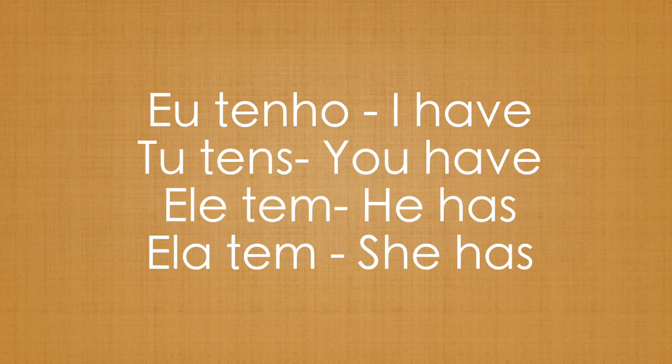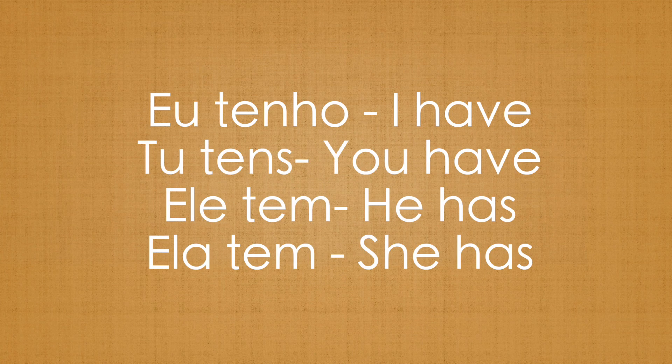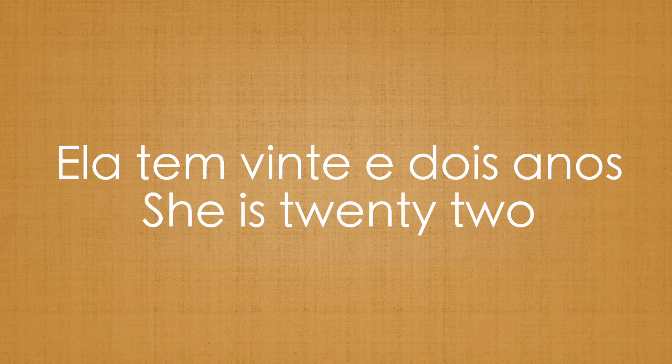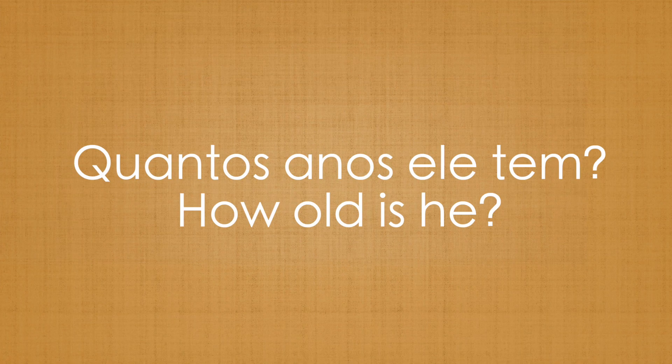Eu tenho, tu tens, ele tem, ela tem. I'll repeat: eu tenho, tu tens, ele tem, ela tem. Let's now ask about a third person. Quantos anos ela tem? Ela tem 22 anos. Quantos anos ele tem? Ele tem 27 anos.